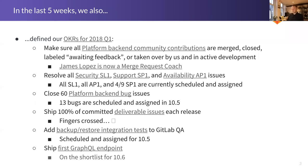There are a couple of these that I'd specifically like to call out. As you can see, one goal is to close 60 platform backend bug issues. This is one of the goals for this quarter — to make a significant dent in the backlog of bugs that we have outstanding. This is going to be selected in part because of priority and stuff that a lot of our customers are hitting. We're also going to try to address some of the longer-standing bugs, like 500 errors or exceptions on some pages that we've technically known about for a while but never really made time to address.